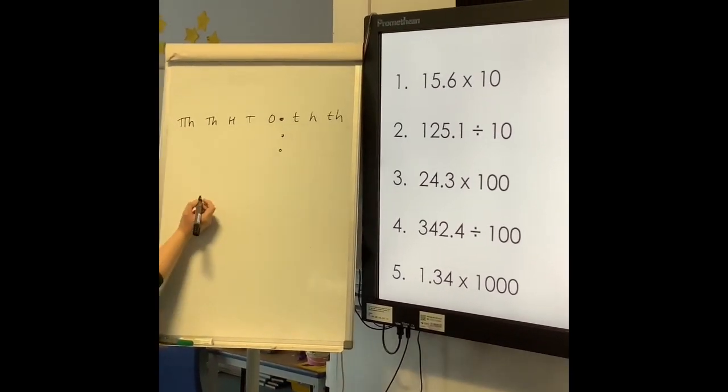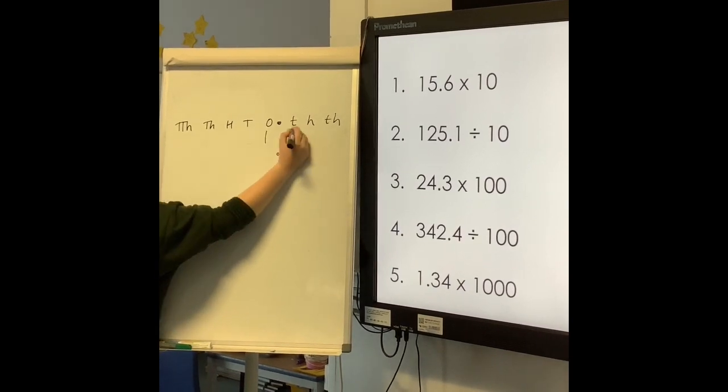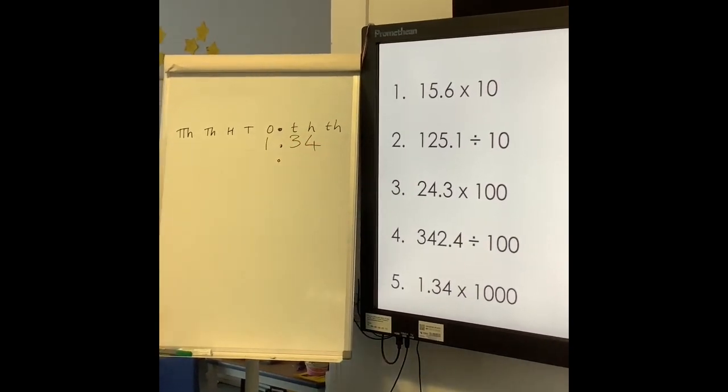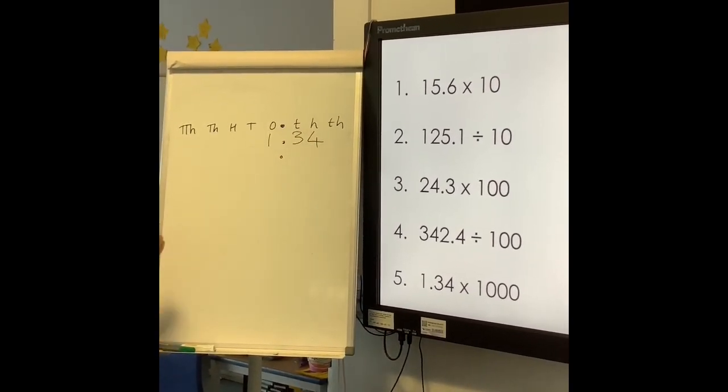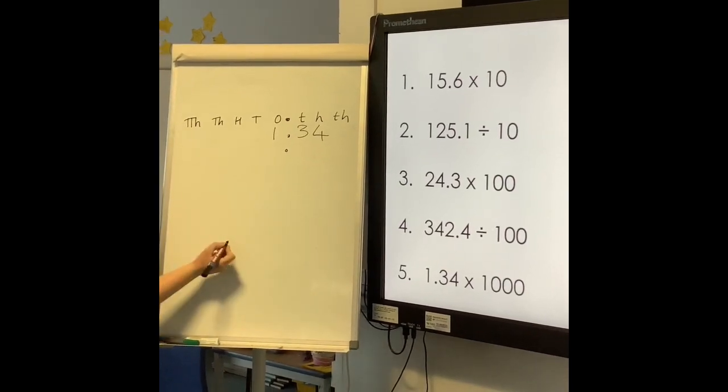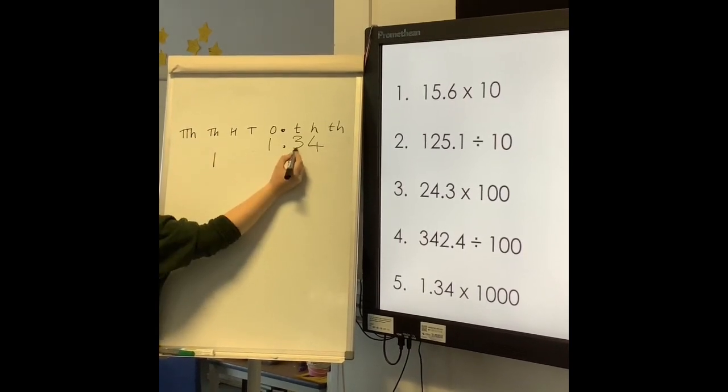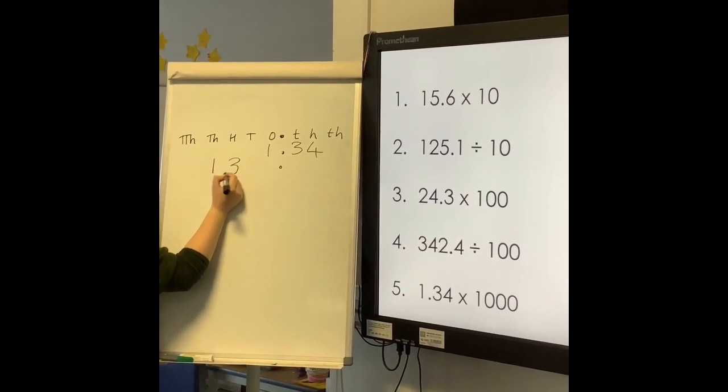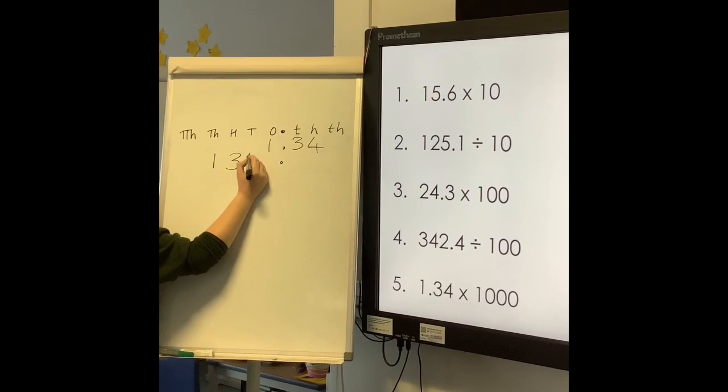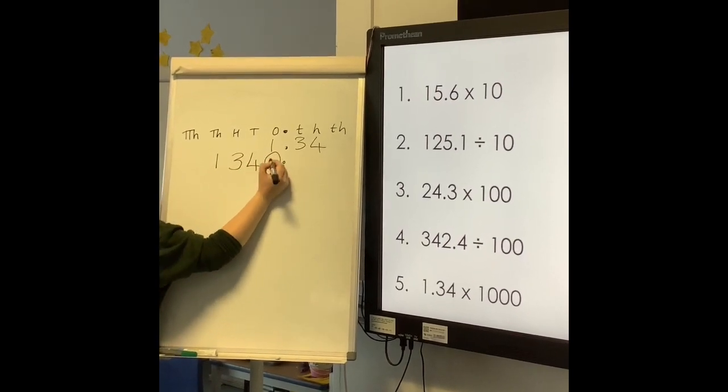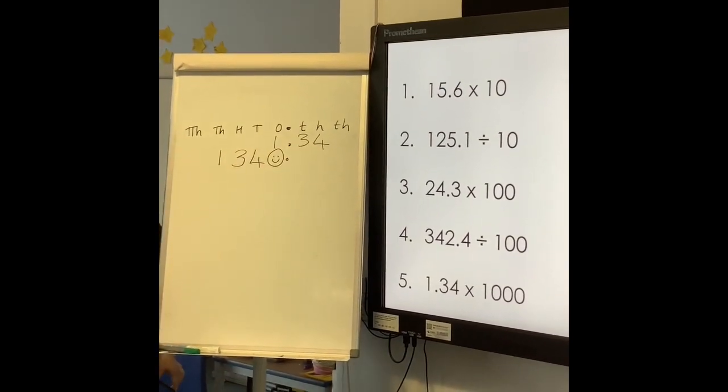Final one: This time we have 1.34 and we're timesing by 1,000. That means we're moving up three place value columns. 1, 2, 3 into the thousands. 1, 2, 3 into the hundreds. And 1, 2, 3 into the tens, with again your placeholder. Well done if you've got them all right.